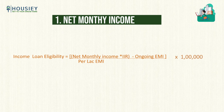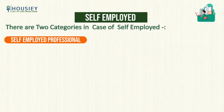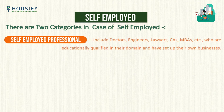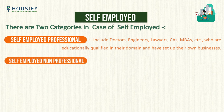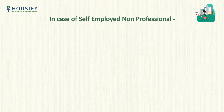There are two categories of self-employed. The first one is the self-employed professional — it includes doctors, engineers, lawyers, CAs, MBAs — all those who are educationally qualified in their domain and have set up their own businesses. The second one is the self-employed non-professional, which includes traders, contractors, and commission agents who run their own business but do not have an educational qualification in that sector.